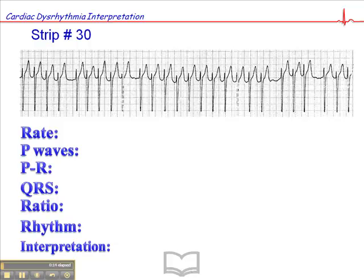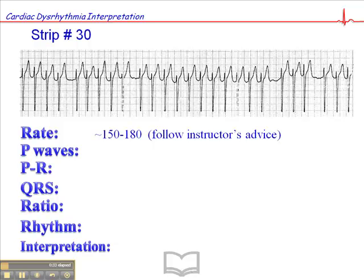At a glance this looks like a very fast rhythm, a tachycardic rhythm, and the heart rate is in fact somewhere between 150 and 180. And because the rhythm is irregularly irregular, there'll be some differences of opinion as to what the heart rate is. But again, as I mentioned earlier, when you have an irregularly irregular rhythm like this, you want to have a heart rate range which is reflective of the patient's sort of average heart rate range.